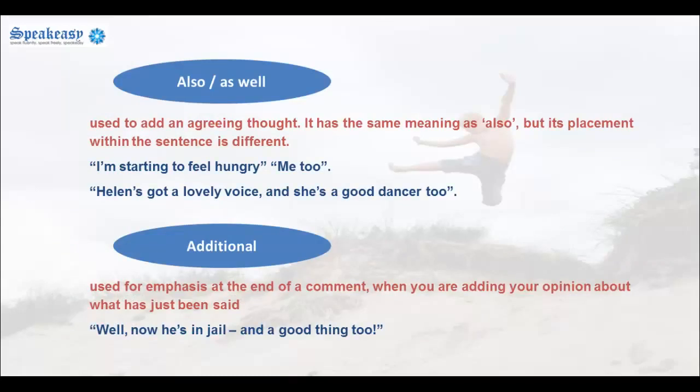Now let's look at its use to mean 'also' or 'as well.' Use 'too' to add an agreeing thought. It has the same meaning as 'also', but its placement within the sentence is different. For example: 'I'm starting to feel hungry.' 'Me too.' Or: 'Helen's got a lovely voice.' 'And she's a good dancer too.'